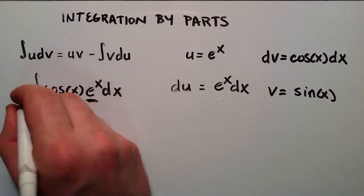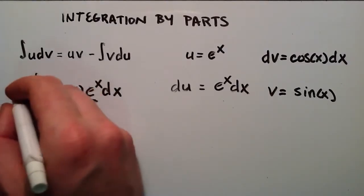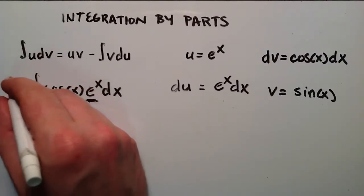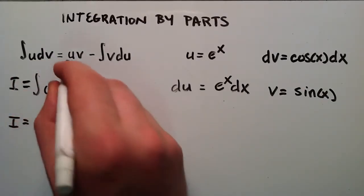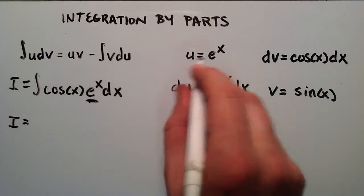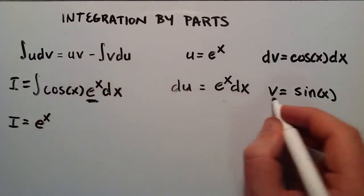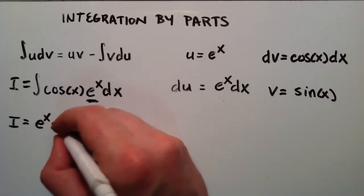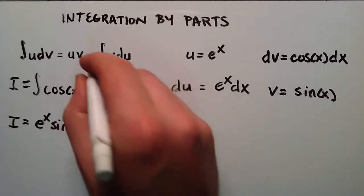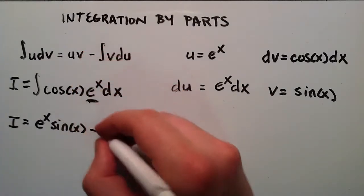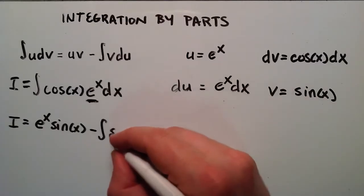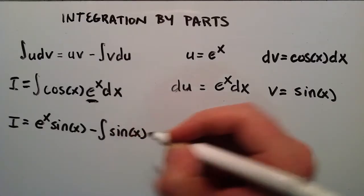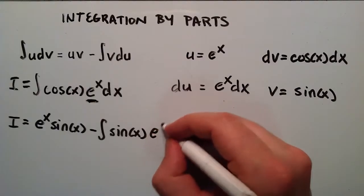So let's just go ahead and define this integral that we're trying to solve. We're going to define it as i. So now we have i is equal to u times v. u is e to the x, v is sine x. And then minus the integral of v times du. v is sine x, du is e to the x dx.